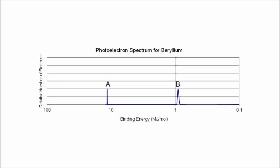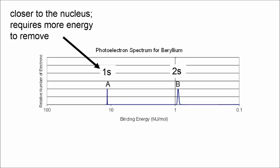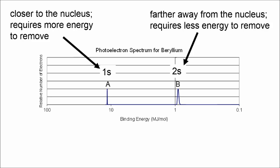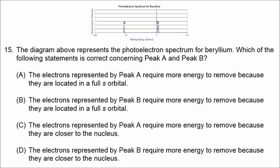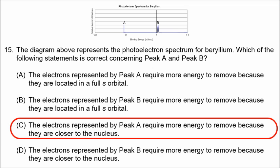Here we have the PES diagram — the photoelectron spectrum for beryllium. Peak A refers to the 1s orbital because it has higher binding energy. Peak B refers to the 2s orbital because it has lower binding energy. The electrons in the 1s orbital are closer to the nucleus and require more energy to remove, while electrons in the 2s orbital are farther away and require less energy to remove.